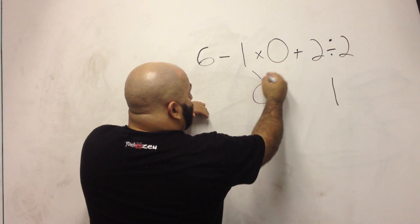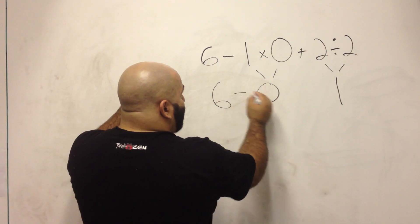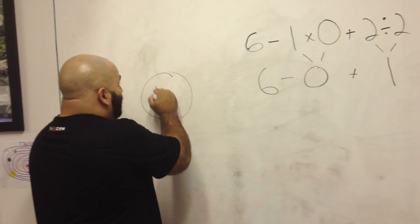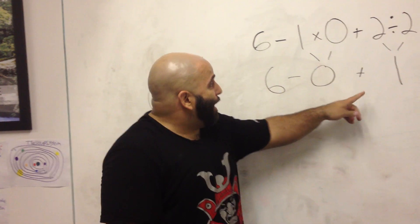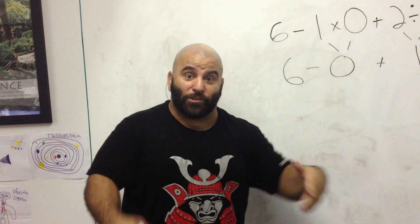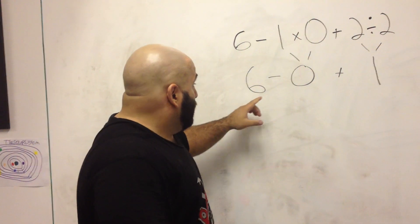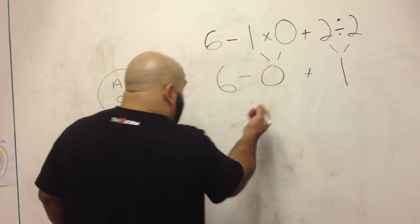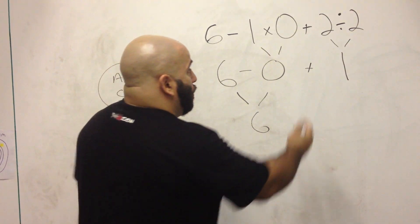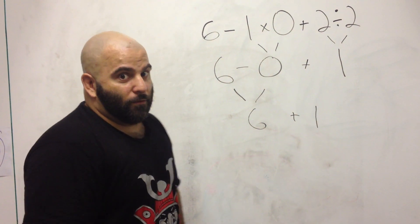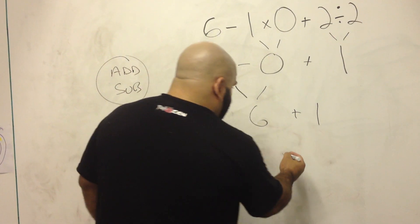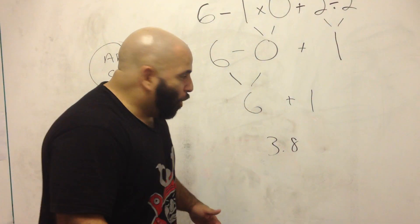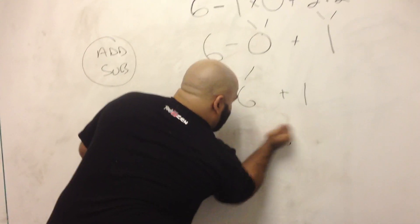Carrying everything else down, because this becomes this and that becomes that, we have 6 minus 0 plus 1. Now we're in that other bubble — addition and subtraction. Everything we have now is in that bubble, so what do we do? We go left to right, just like reading. 6 minus 0 is 6, plus 1. Some poor guy on my Master Chimp page put 3.8 — no. Go headbutt a screw, okay?